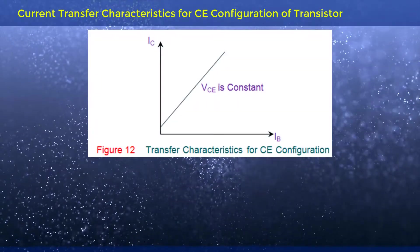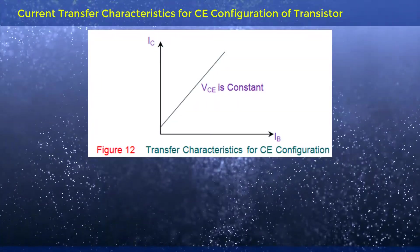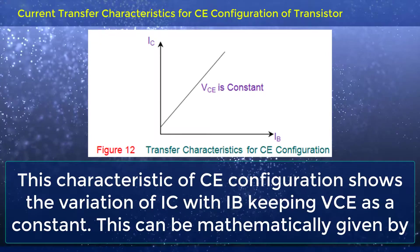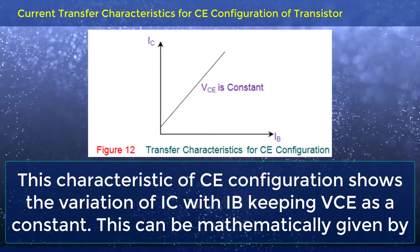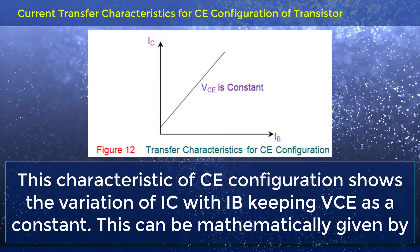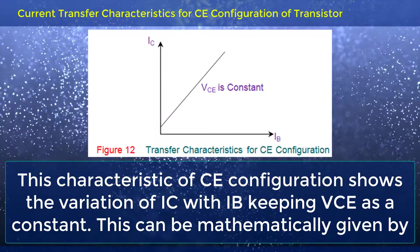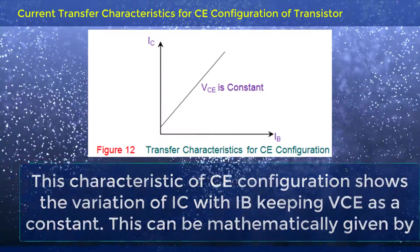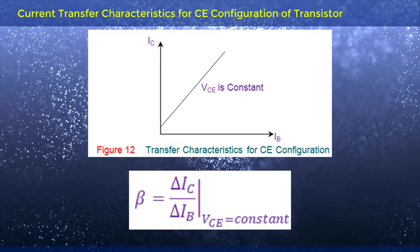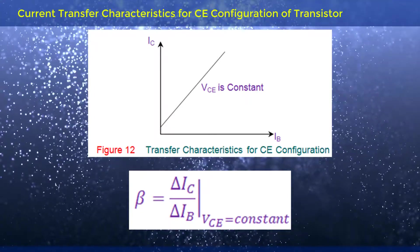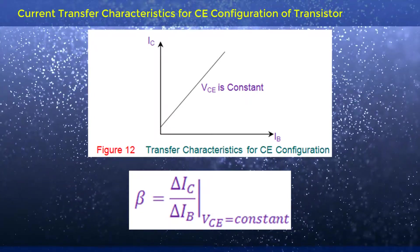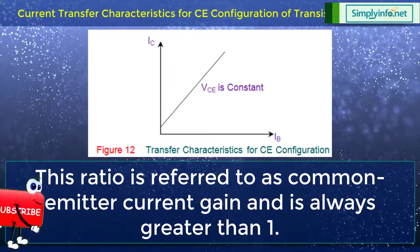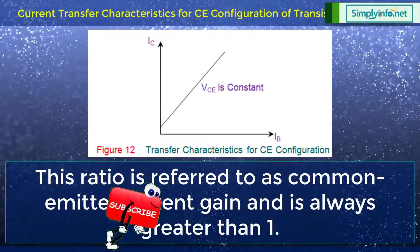The current transfer characteristics for CE configuration of Transistor show the variation of IC with IB, keeping VCE as a constant. This can be mathematically expressed as beta equals delta IC divided by delta IB, where VCE is constant. This ratio is referred to as common emitter current gain and is always greater than 1.